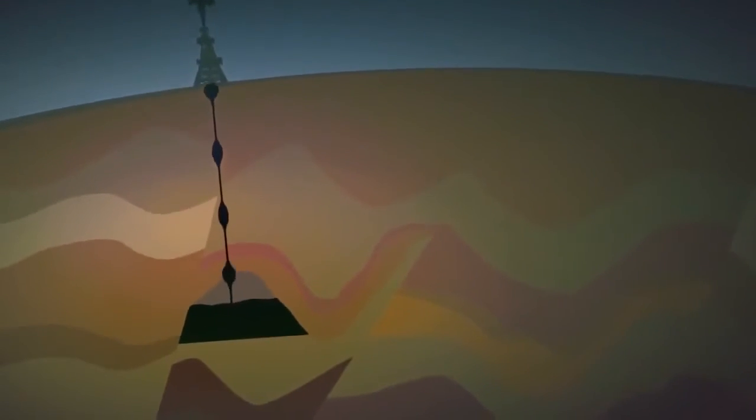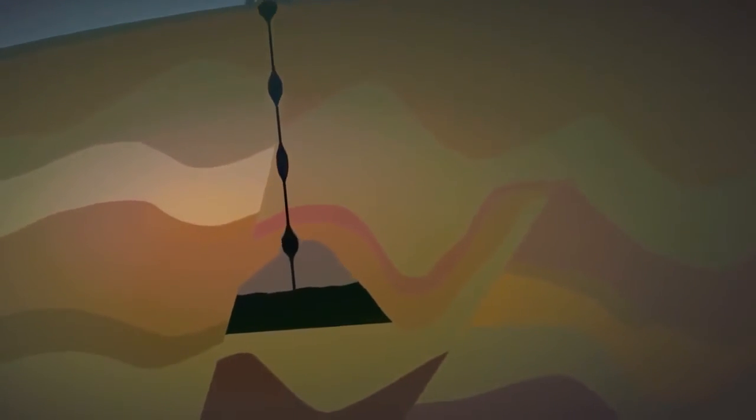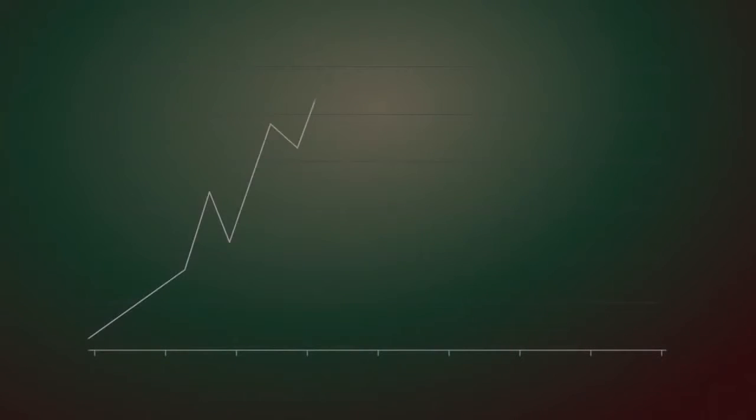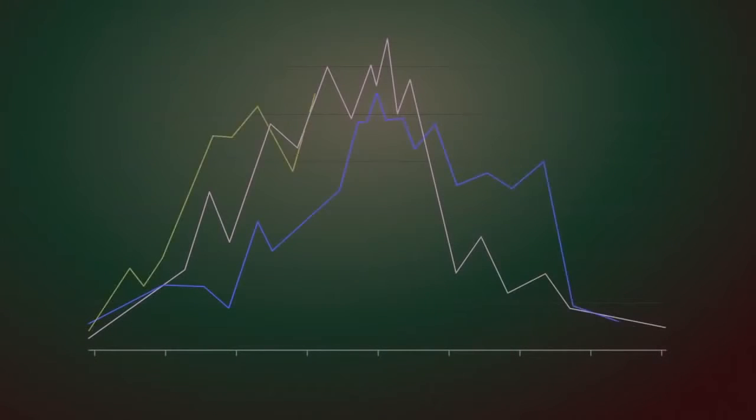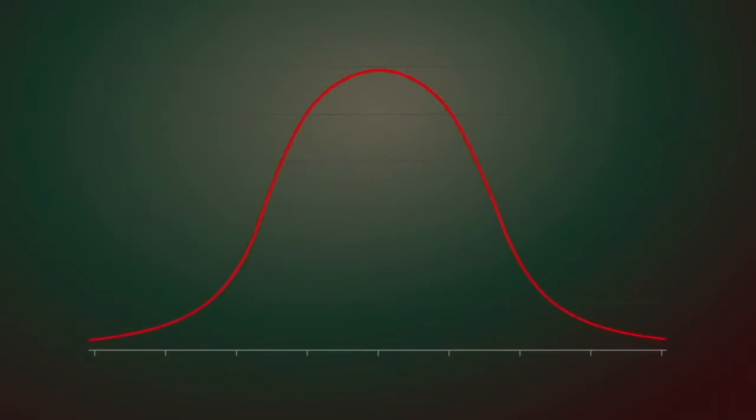Once an oil well starts producing oil, it's only a matter of time before it enters a decline. Individual wells have different production rates. When many wells are averaged together, the combined graph looks like a bell curve.